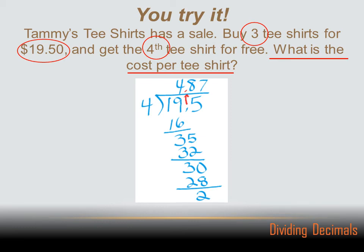And we've got to remember that we have to move that decimal point straight up into the answer. And then we've got 4 goes into 19 four times, and we do that math, and we end up with 4.87. $4.87 per T-shirt when you get 4.